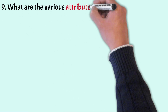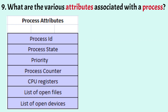What are the various attributes associated with a process? The operating system maintains a Process Control Block (PCB), a data structure that stores information about a process. Attributes stored in the PCB include: process ID — a unique identifier assigned by the OS; process state — the current state such as ready or running; and priority — each process has its own priority and the one with higher priority gets the CPU first.